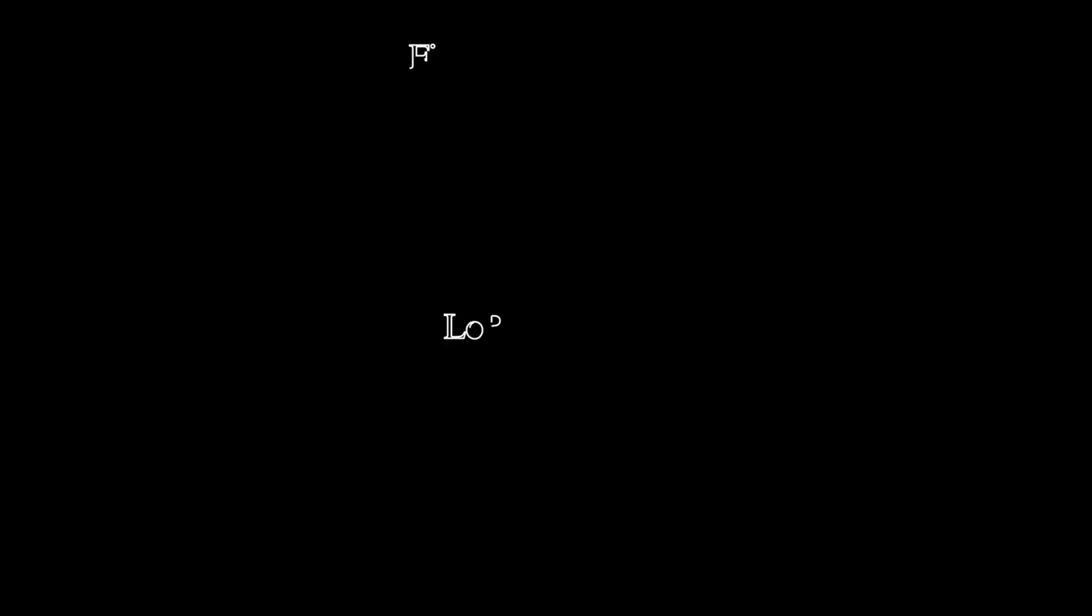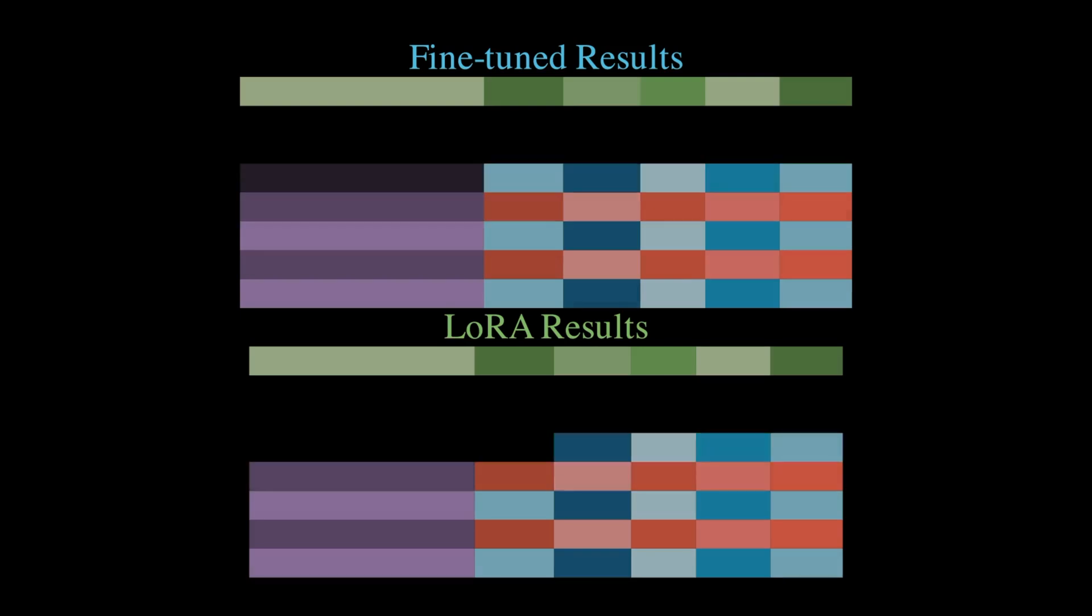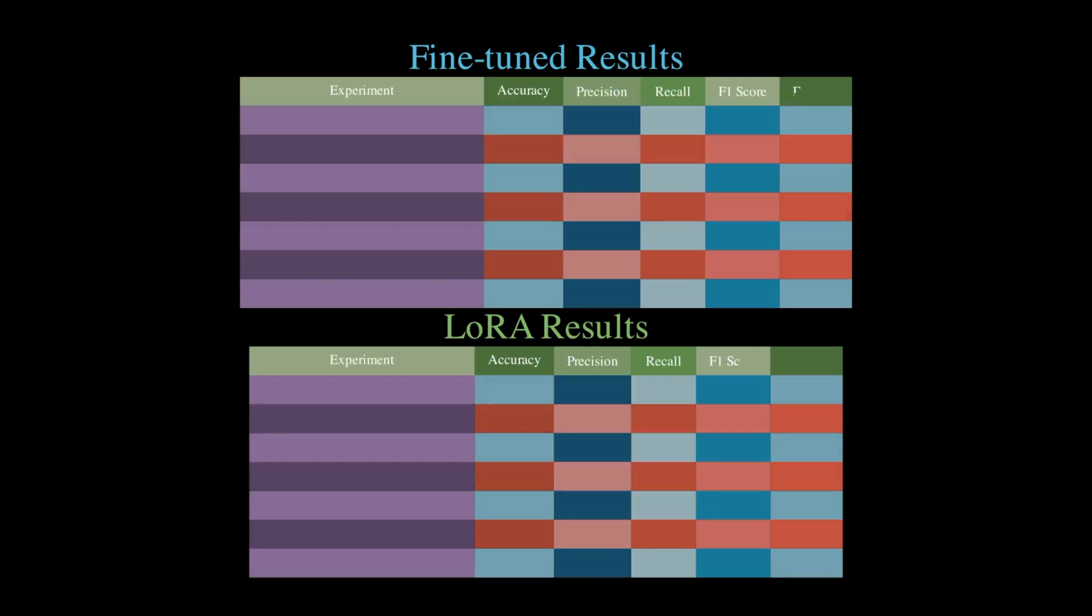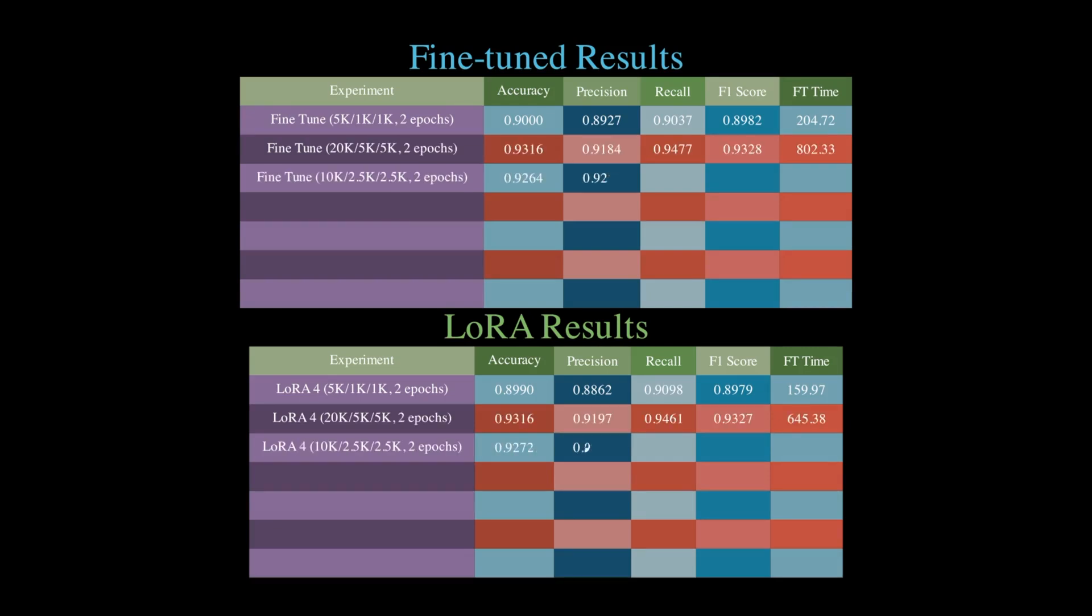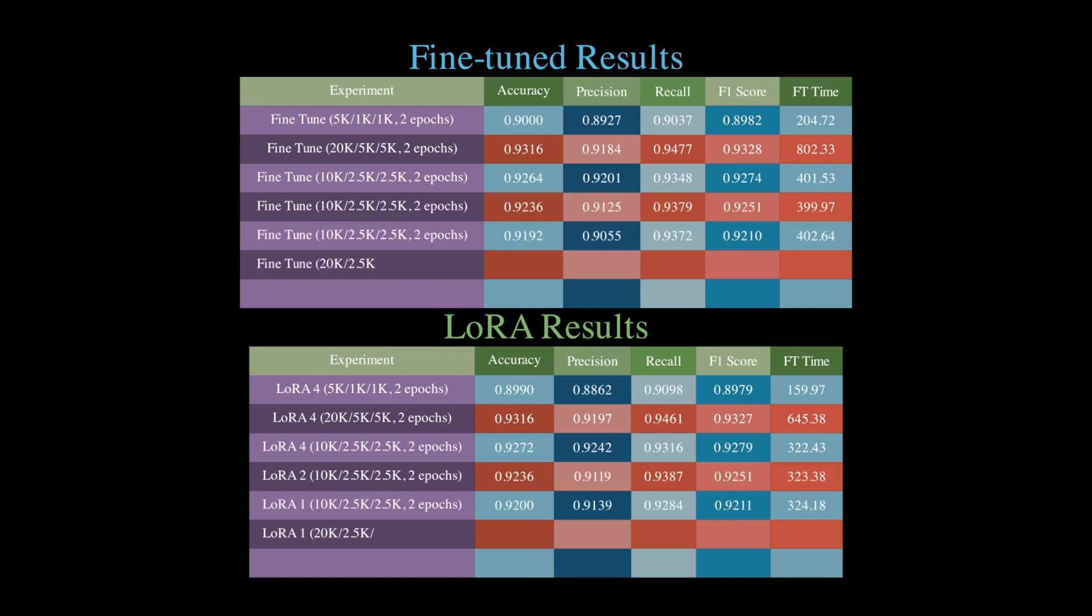Now let's take a look at the results of our experiments comparing the regular fine-tuning and LoRa fine-tuning. We'll start with the table on top, which shows the results for the regularly fine-tuned model. The numbers in parenthesis next to each experiment represent the sizes of the training, validation and test sets respectively.